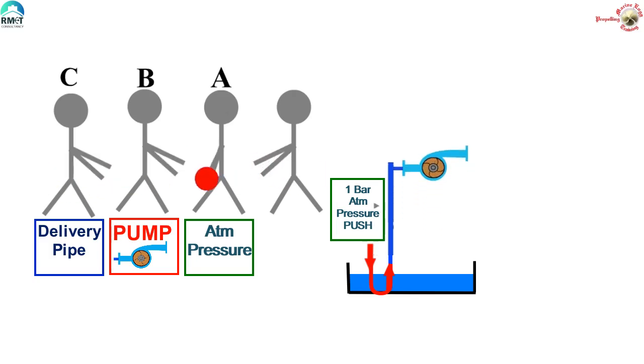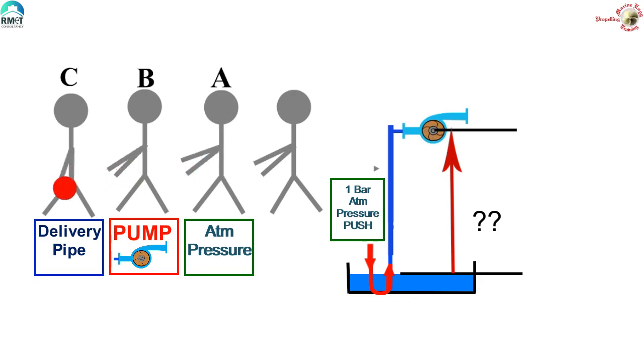Then the question arises, how much up can the atmospheric pressure push the water? I guess all of you know the answer. Yes, for fresh water, the pump can push up to 10 meters theoretically. For other liquids, it depends upon the viscosity and density.